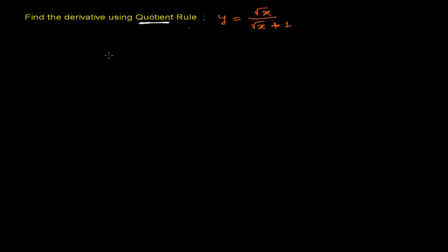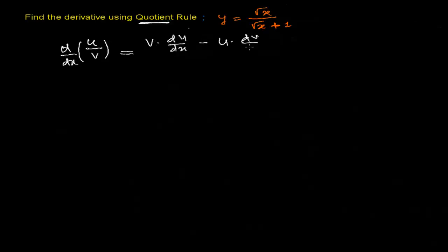Let's first talk about the quotient rule. If you have a function u being divided by another function v, and you have to find the derivative with respect to x, then it is v times the derivative of u minus u times the derivative of v, over the square of v. So if u is the first function and v is the second function, it is the second function times the derivative of the first, minus the first function times the derivative of the second, over the square of the second function.